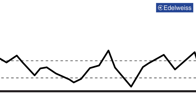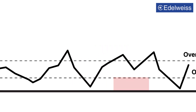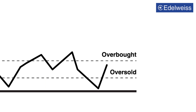RSI above 70 is considered as overbought and below 30 as oversold. An overbought position implies that the positive movement of the stock has peaked and there could be a correction. An oversold condition suggests that bearish momentum has hit the bottom and is ready for a possible upward movement.